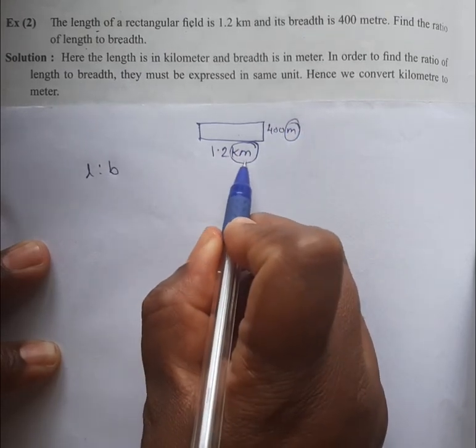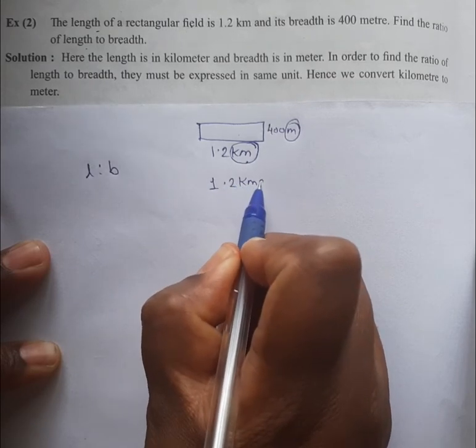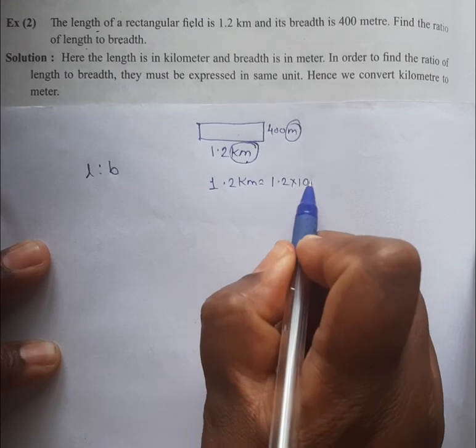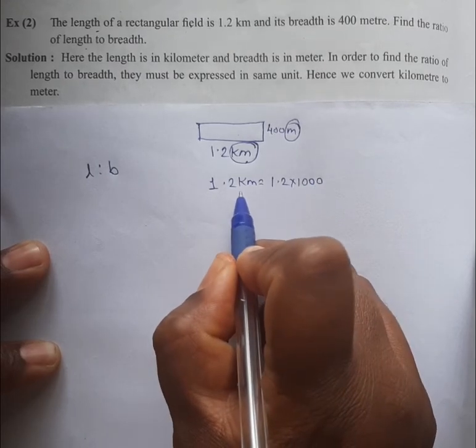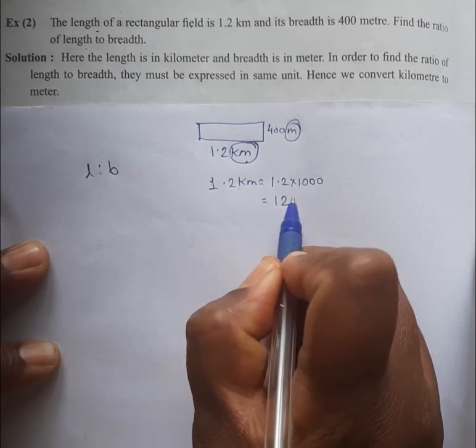1.2 kilometers is equal to 1.2 into 1000. Why 1000? We know that 1 kilometer is equal to 1000 meters, so our answer will come here as 1200 meters.